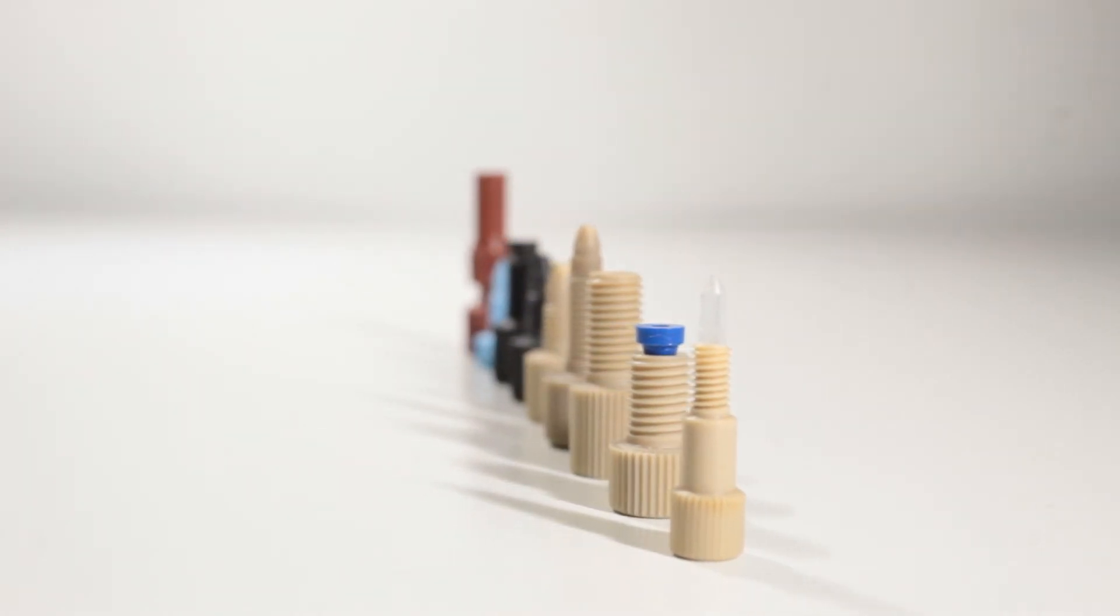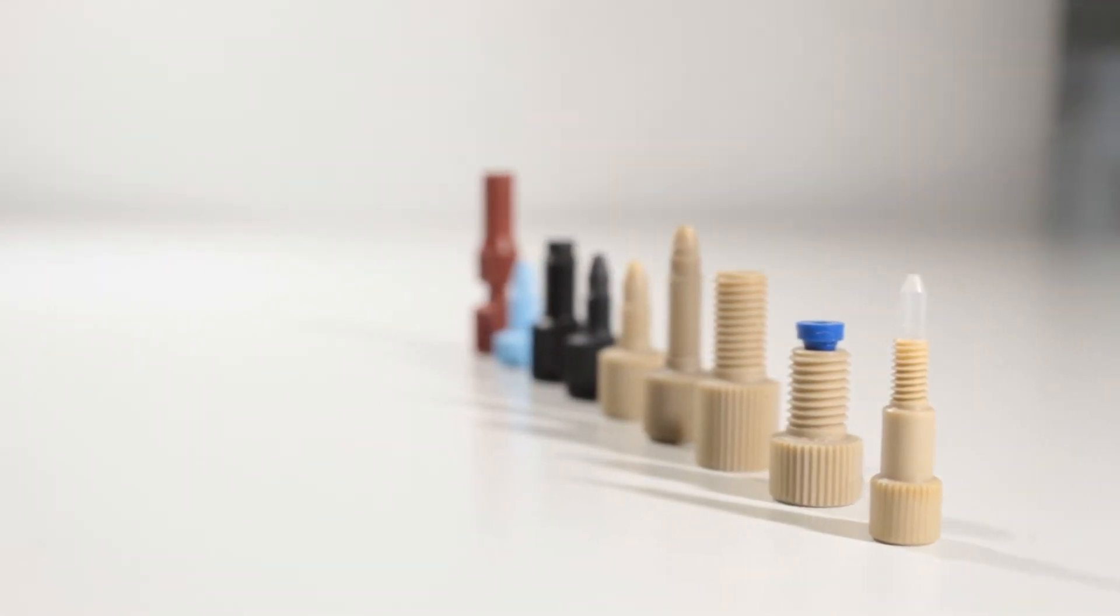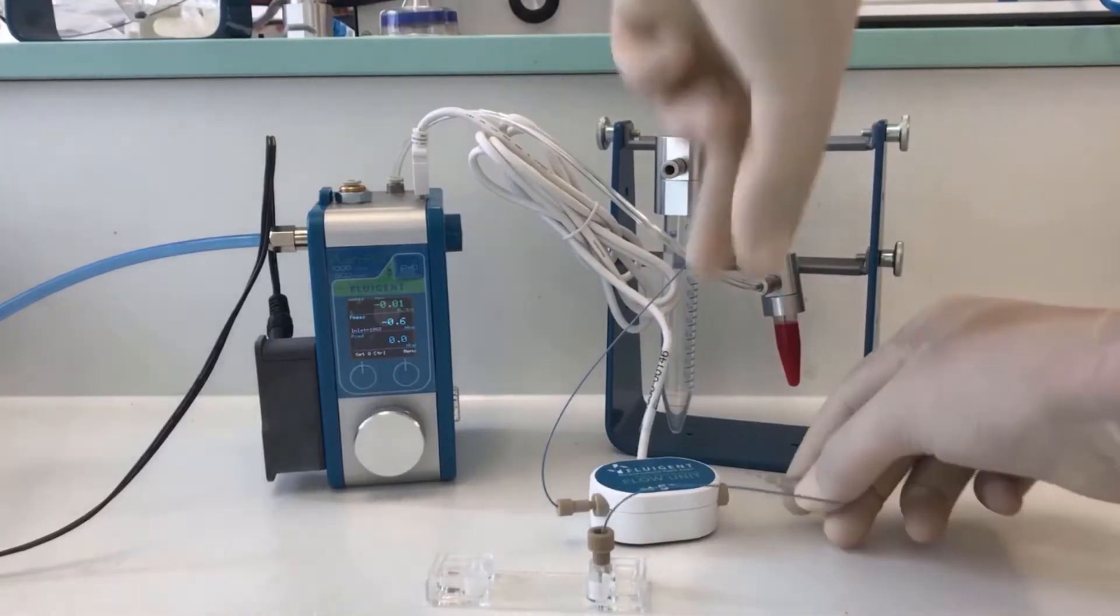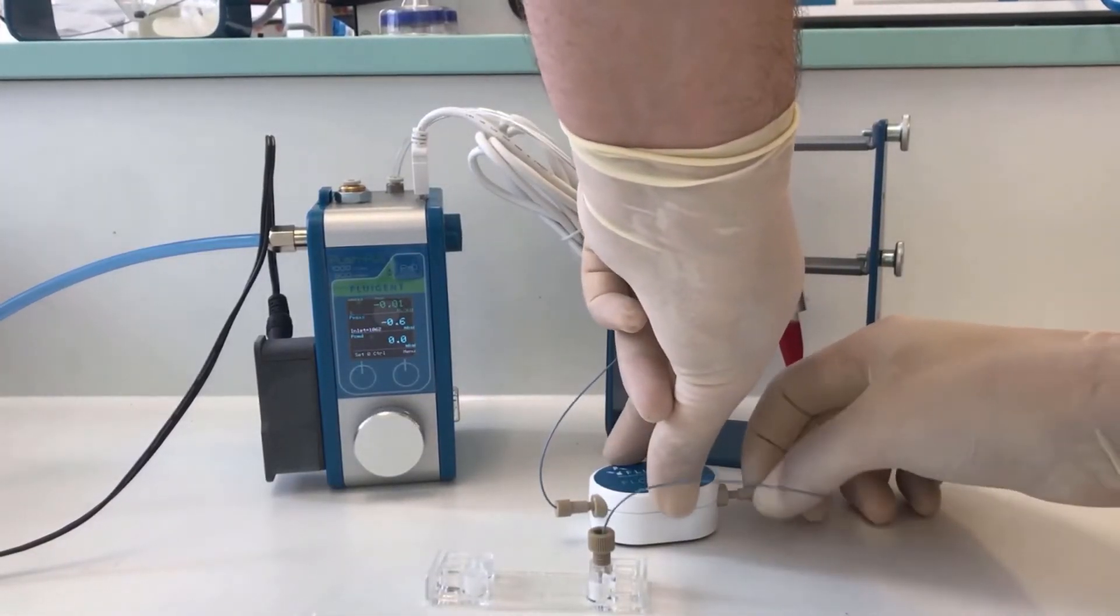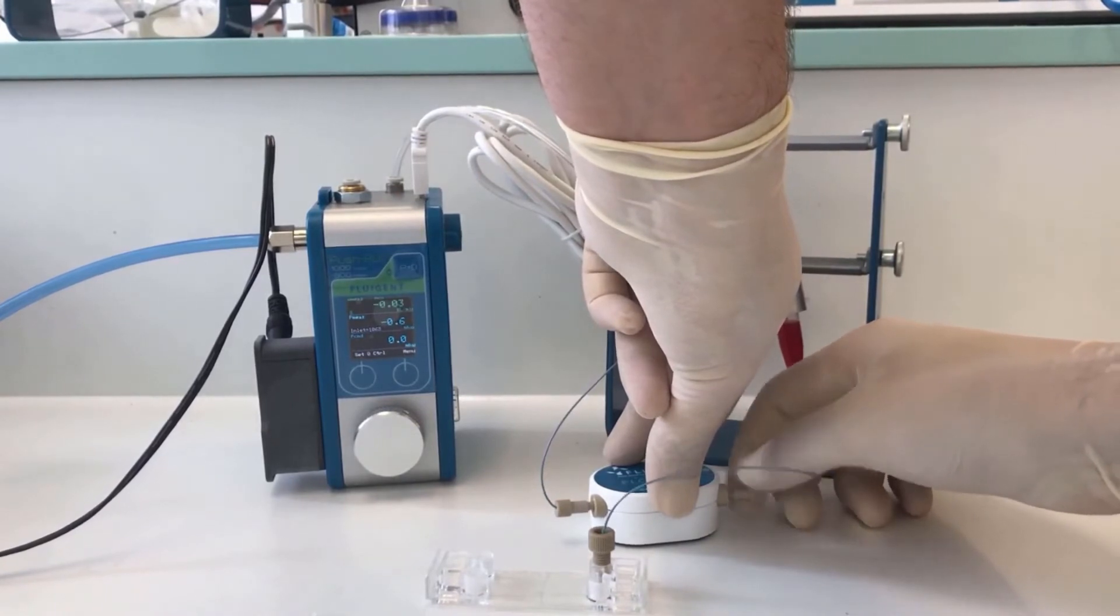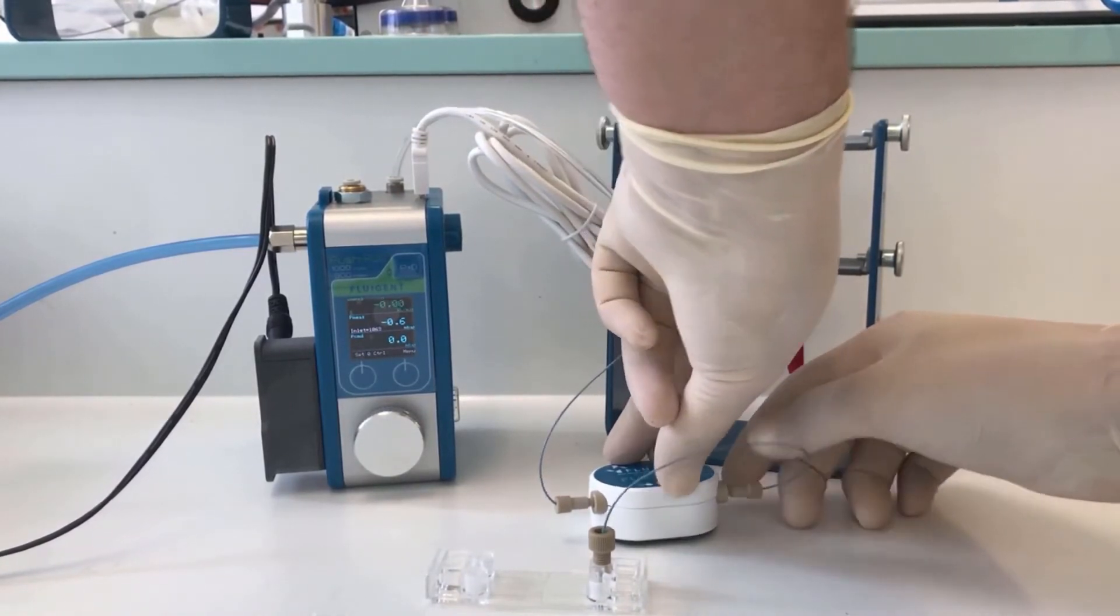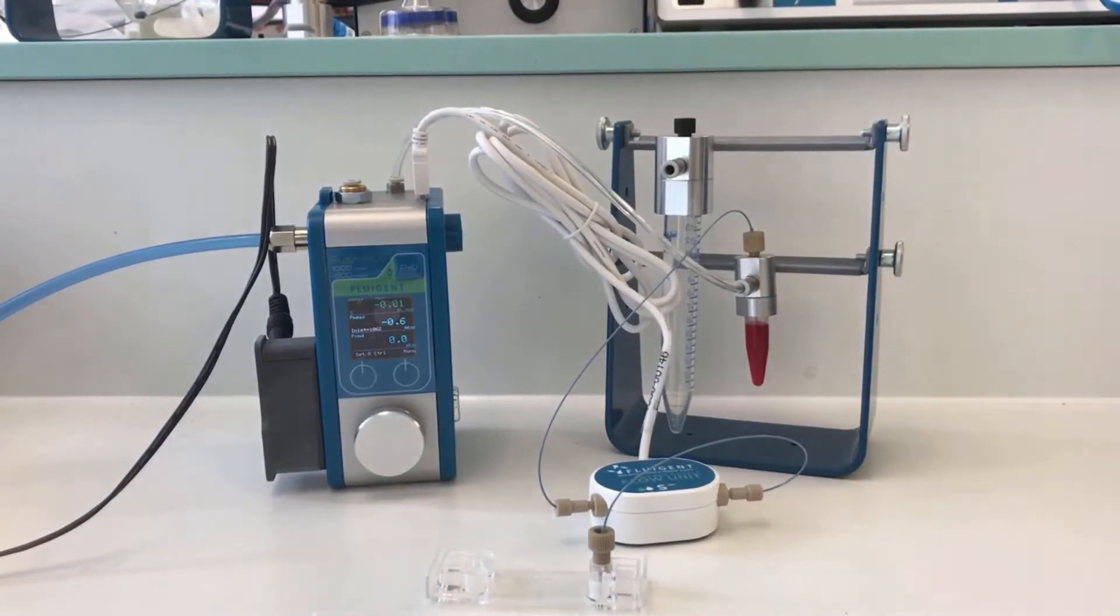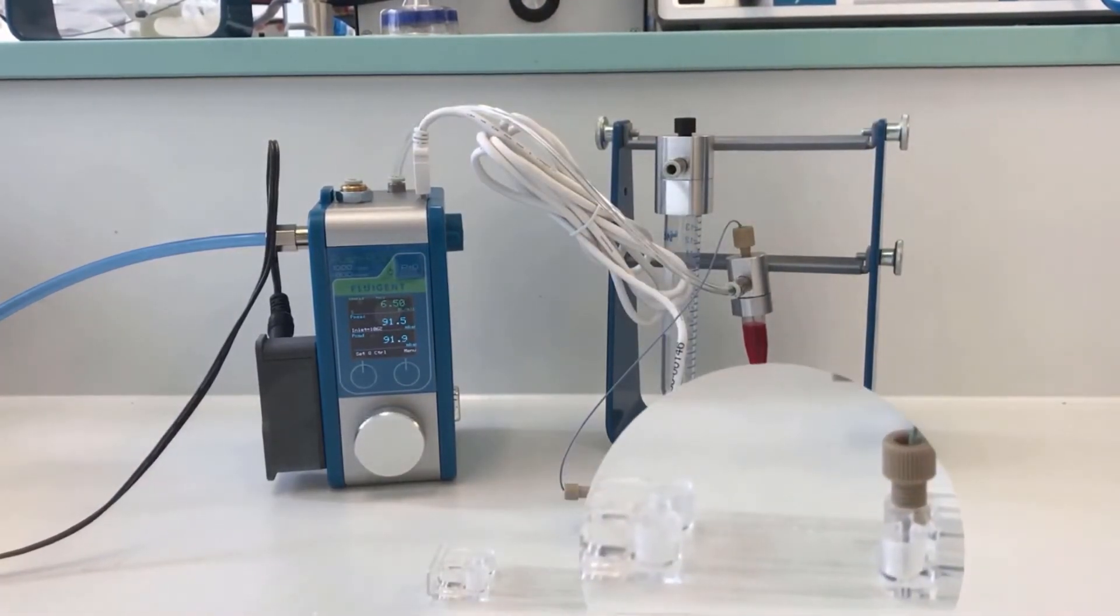Depending on the model, Fluigent provides a dedicated tubing and fitting kit to insert the sensor in the fluidic path and benefit from optimal performance for your experiment. Connect the sensor to the pressure controller or to the Flow Board Hub, connect your fluidic input and output, and immediately actuate your fluids with accuracy and great responsiveness.